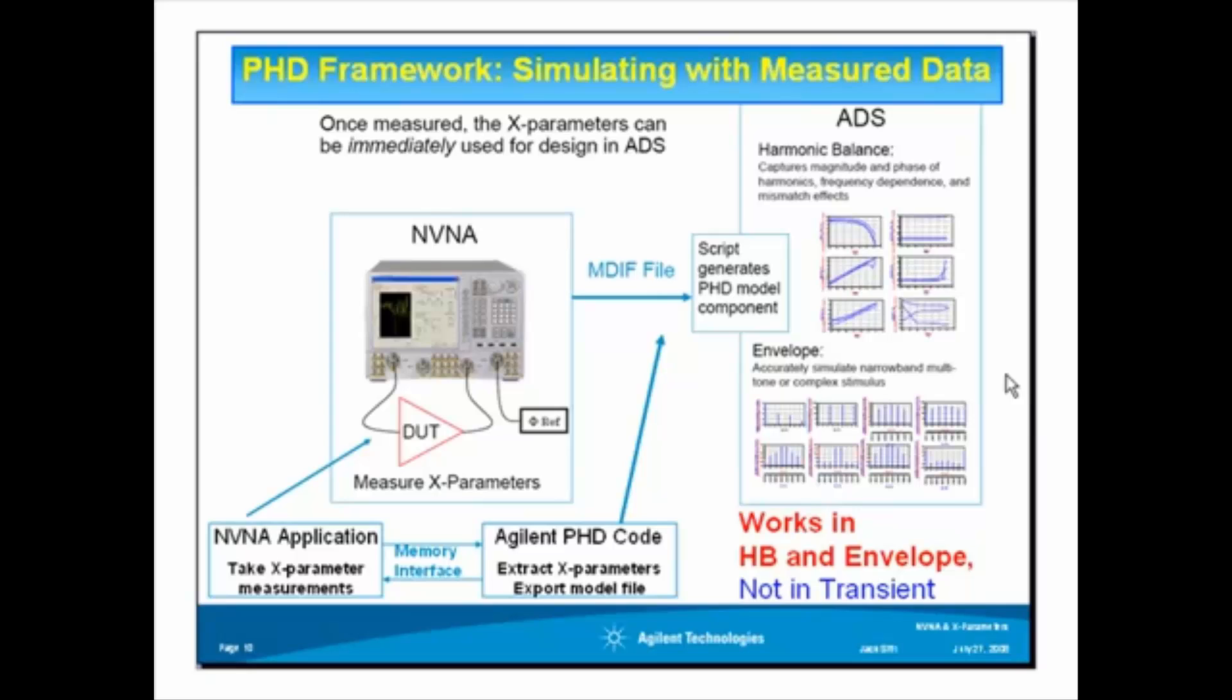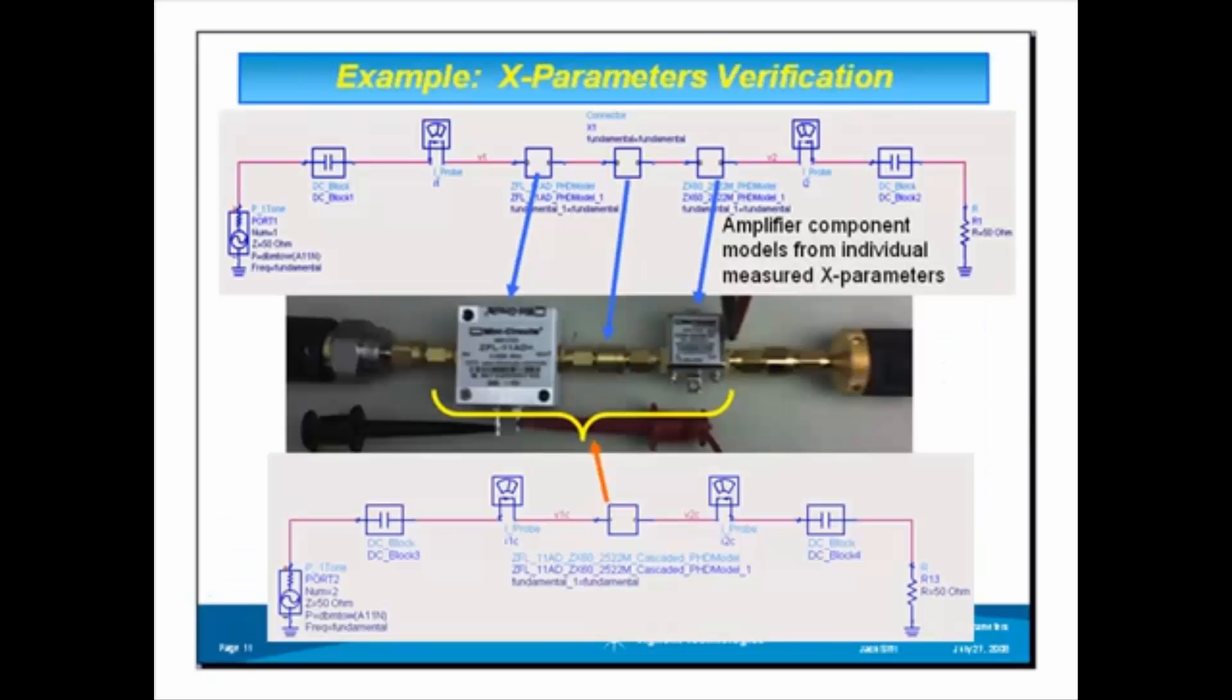Here's an example: you have measured X-parameters for amplifier 1 and amplifier 2 that were generated separately from the NVNA. We cascade these two components together and in ADS we simulate the cascaded amps.